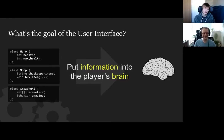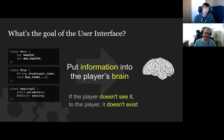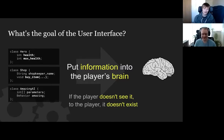The goal is to put information into the player's brain. You definitely want to tell them these things, because if you spent six months making an amazing AI system, you really need to work out how to put that information in their brain. If the player doesn't see it, then to the player it doesn't really exist. So if the player never sees the shopkeeper's name shown somewhere, they're never going to know that a shopkeeper technically has a name.